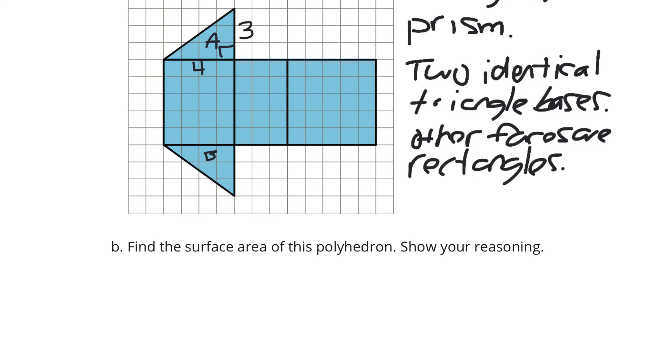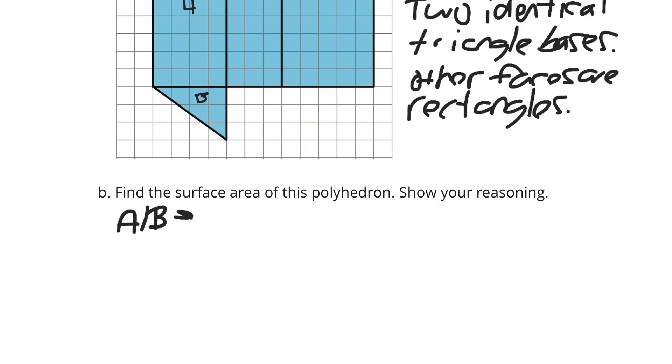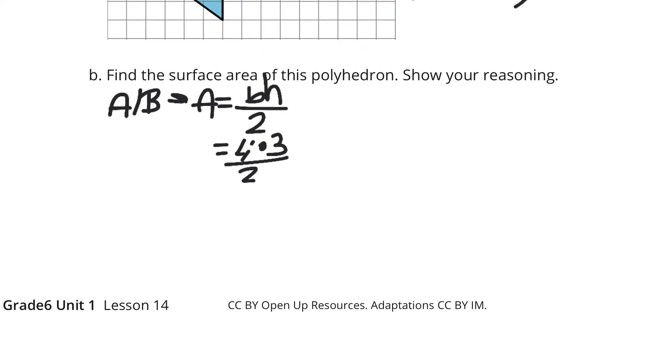area for triangles for both A and B here, area equals our base times our height divided by 2. And we have the base of 4, the height of 3, and we're dividing by 2. So we're going to take 12 and divide it by 2 to get 6. Now, it's 6 for one of the two triangles. If I multiply by 2, that gets me 12 total for the two triangles.